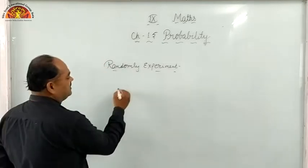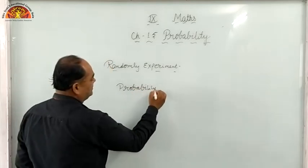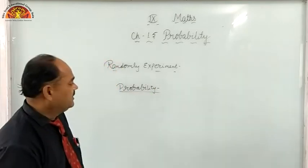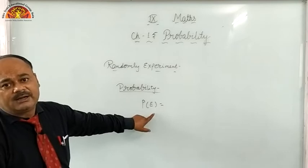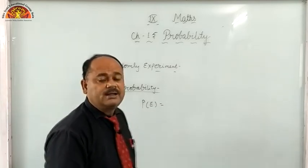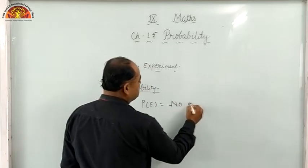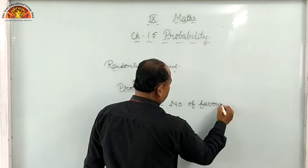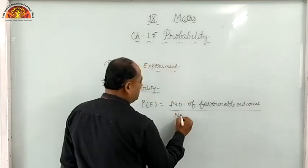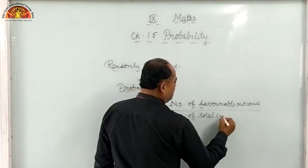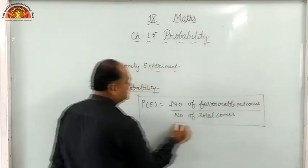Clear? So for any random experiment, we define probability. Probability, which is your topic, is basically dependent on the random experiment. Probability is denoted as P(E), which means probability of the event. The formula is: number of favorable outcomes upon number of total outcomes. This is the empirical formula of probability and it is very important.